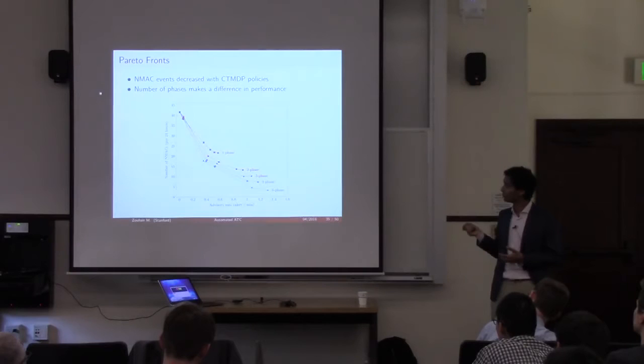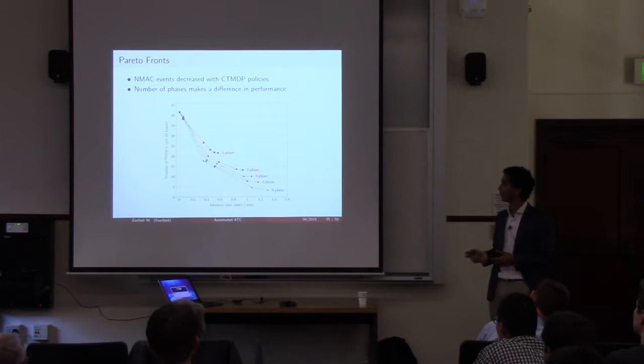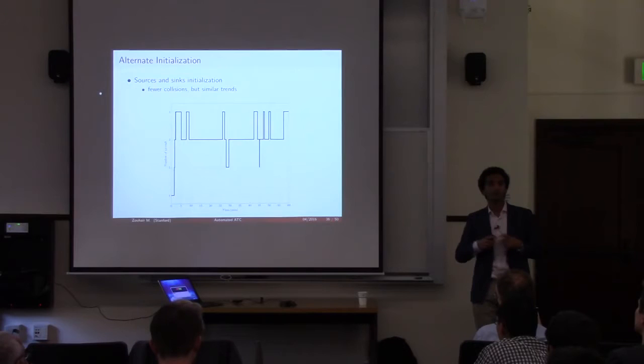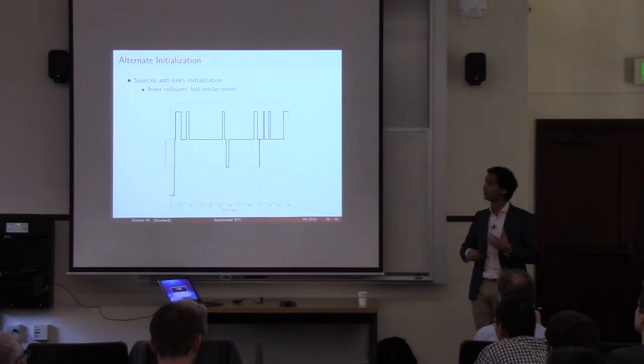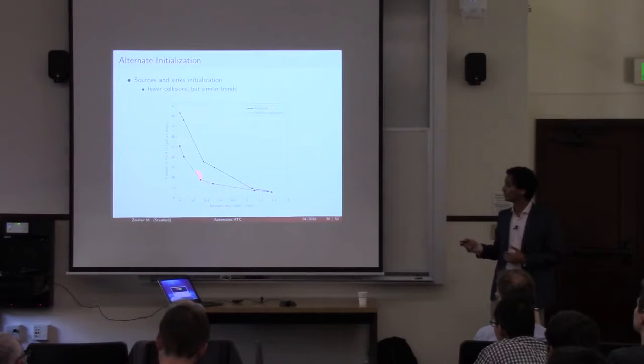Using policies with more phases, we see they do perform better. As you include more phases, you can issue more rates and reduce the number of NMACs. With six phases, we've almost eliminated them. We also looked at different ways of simulating this — rather than having four aircraft in the pattern all the time, having airplanes that depart and arrive. Not surprisingly, the baseline NMAC count comes down, but our system still shows the same behavior: Pareto fronts where as we issue more and more alerts, we reduce the number of NMACs. About one and a half communications per minute is not a lot — on the same order as a towered airport.